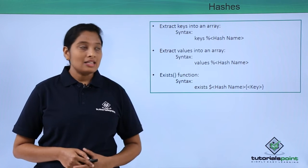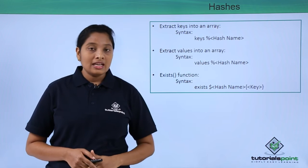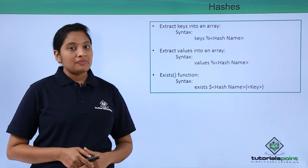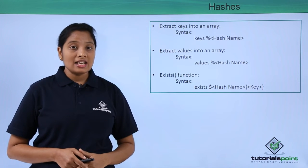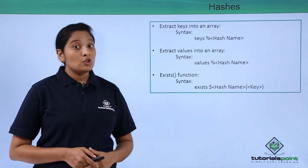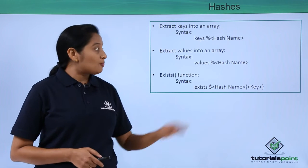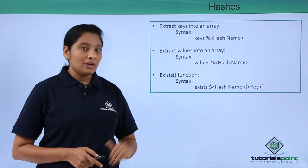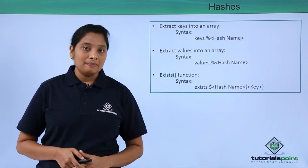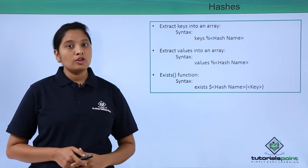To extract keys from a hash, use the keyword 'keys' followed by the hash name. This will result in an array of keys. To extract values from a hash, use the 'values' keyword followed by the hash name. This will result in a values array.